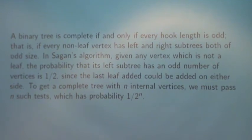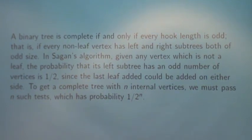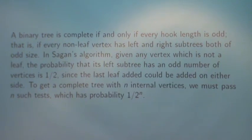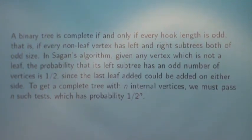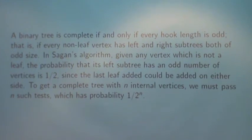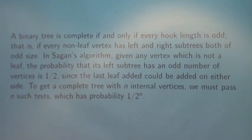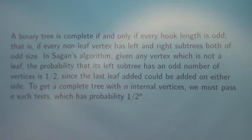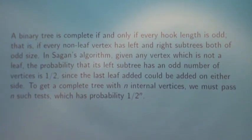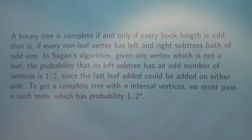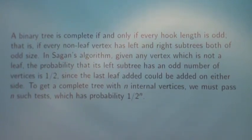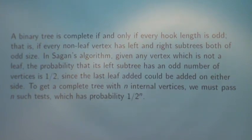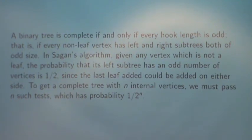So this will generate a tree, and now the question is, is the tree complete? A binary tree is complete if and only if every one of the hooks has odd size — that is, if every non-leaf vertex has left and right subtrees both of odd size. And in Sagan's algorithm, because we are assigning the leaves randomly to each sub-tree, the probability of the last vertex added making the left sub-tree odd was a half. So this has to happen n times for each of the n internal vertices. So the probability Sagan's algorithm gives a complete binary tree on n vertices is exactly 1 over 2 to the n.